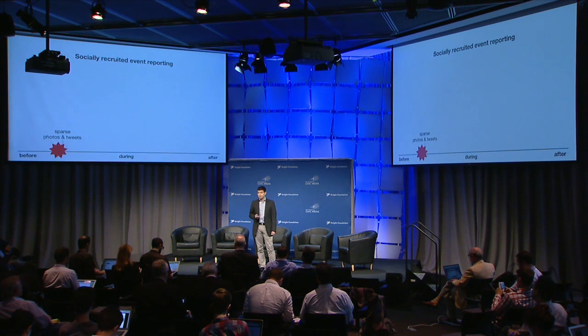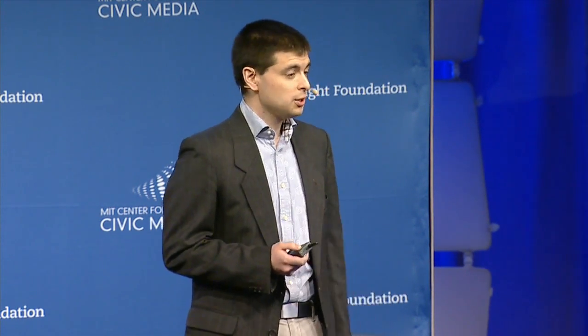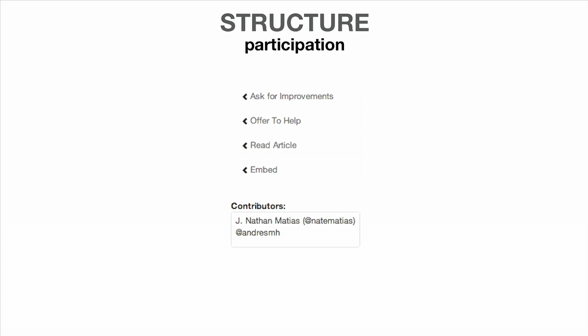Imagine once an event happens, maybe there's some sparse media, someone creates a NewsPad post that anyone can read and edit live. People can also recruit others to contribute to this post, and important sites within the community can embed the article and the editing tools into different parts of the community to create a positive feedback loop that brings more readers and more contributors to the post. We help novice creators generate a listicle-style news title and structure their article in a way that's easy to contribute to.